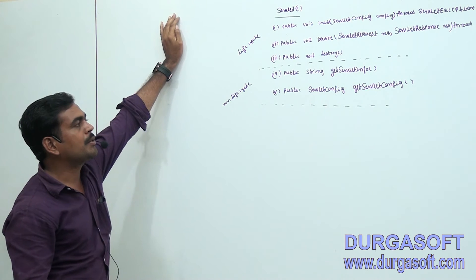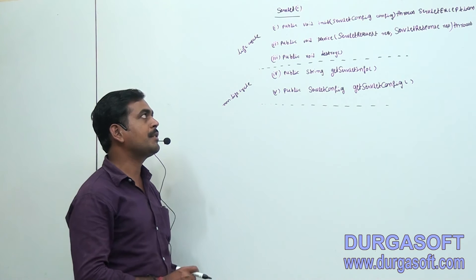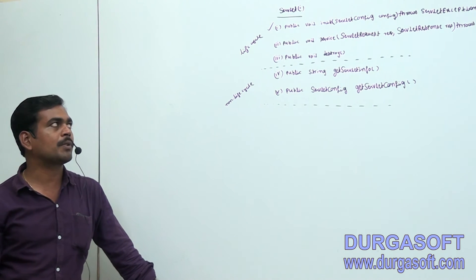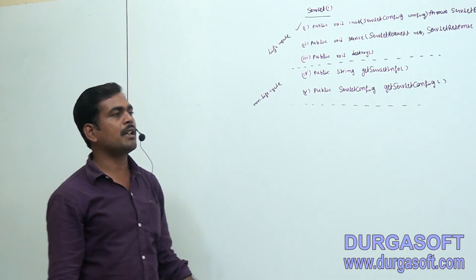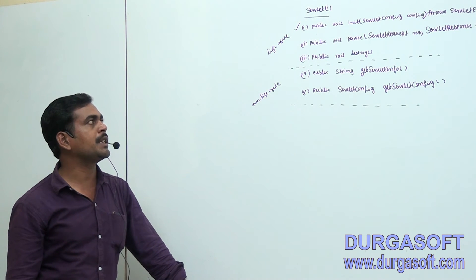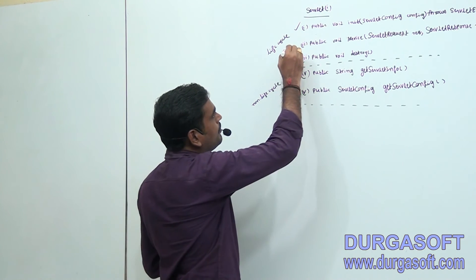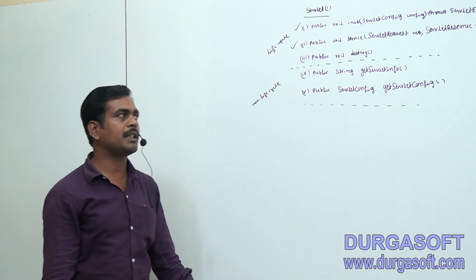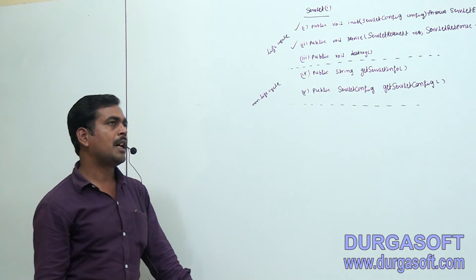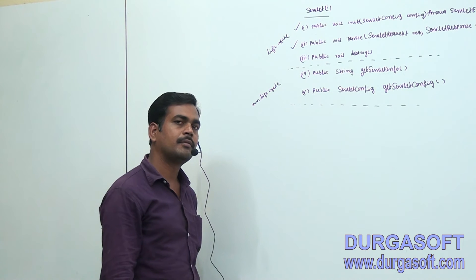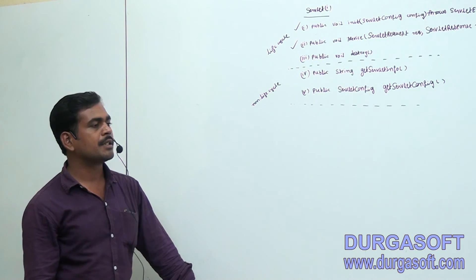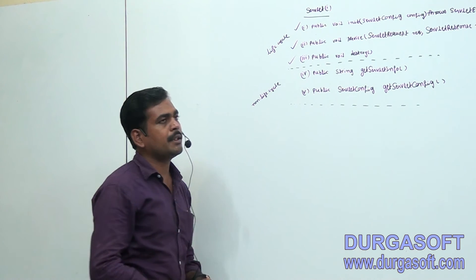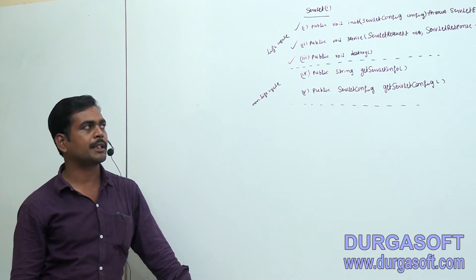What is the purpose of these methods? The init method is used for executing any code only once — for example, connection-related code. The service method is used for implementing the client business logic — for example, calculating the gross salary or net salary of an employee. The destroy method is used when we want to destroy our servlet object.